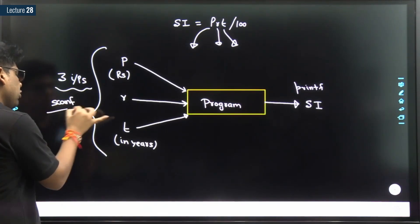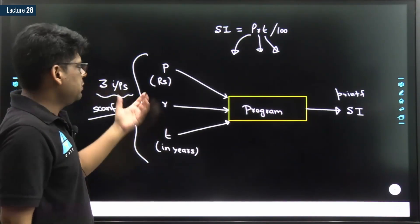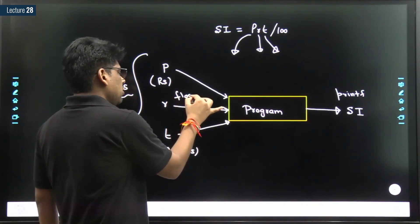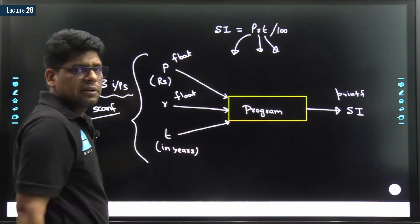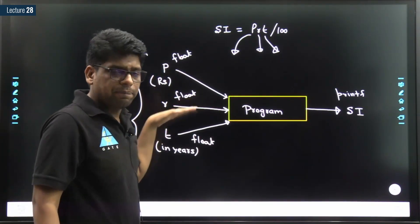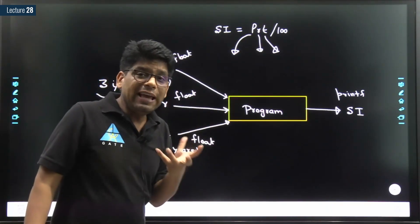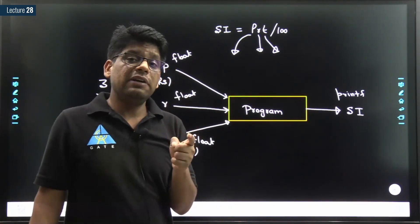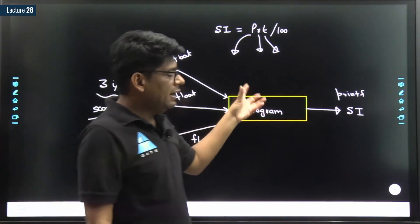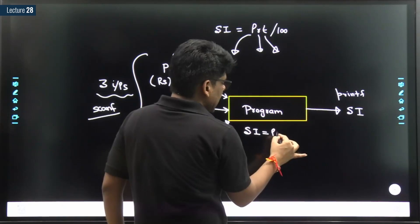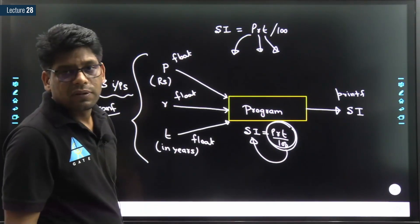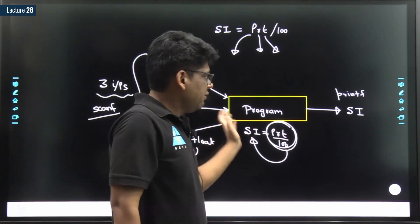We will fetch the inputs using scanf. What should be the data type? These values can be float — yes, of course this can be float. The user will provide three inputs and we need to store them somewhere. Values are stored inside variables, so we need one variable for principal amount, one for rate of interest, one for time. Then we apply the formula P×R×T/100, store the result in another variable, and print the value of SI using printf.